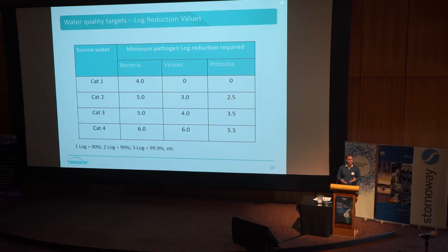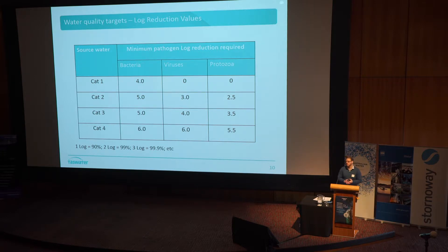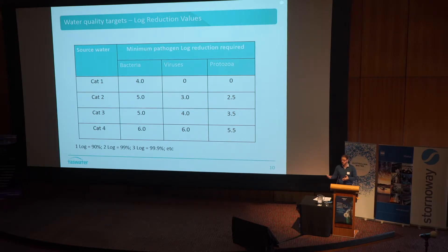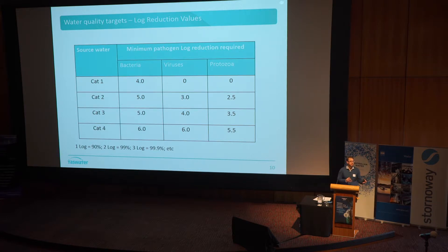In a category one catchment, you're basically only worried about bacteria — you need to remove four log of bacteria. In category four, you've got all the inputs: viruses, bacteria, and protozoa at fairly high concentrations, so you need higher log removals. For those not familiar with log removals: one log removal is 90% removal of what you had in the influent, two log is 99%, three log is 99.9%, and so forth.